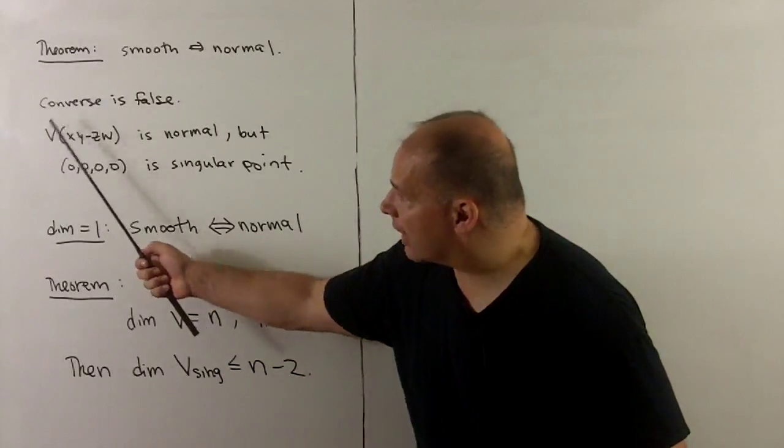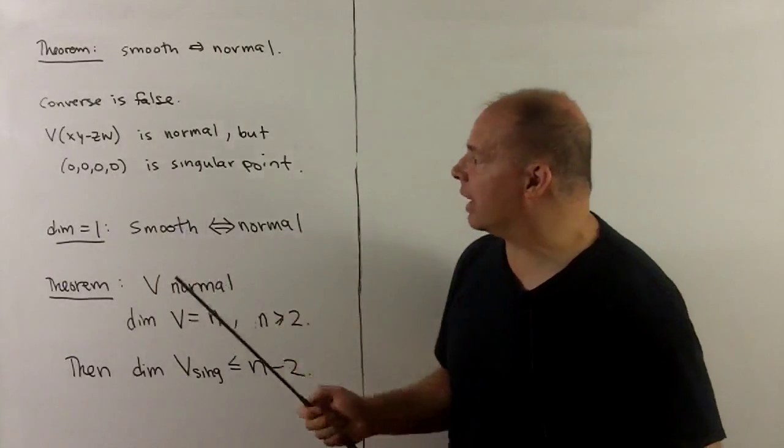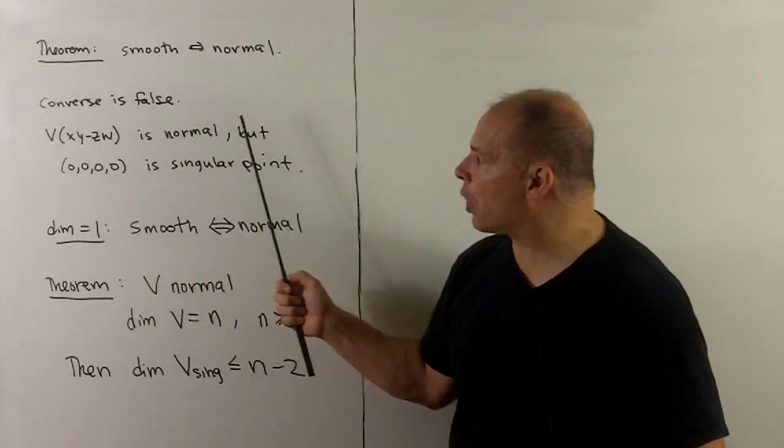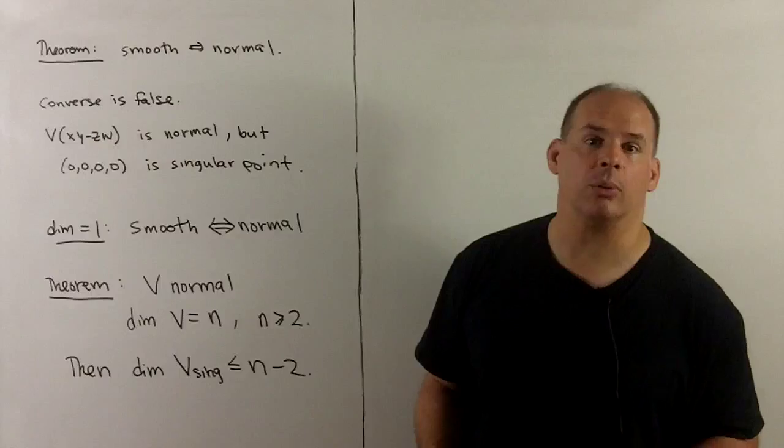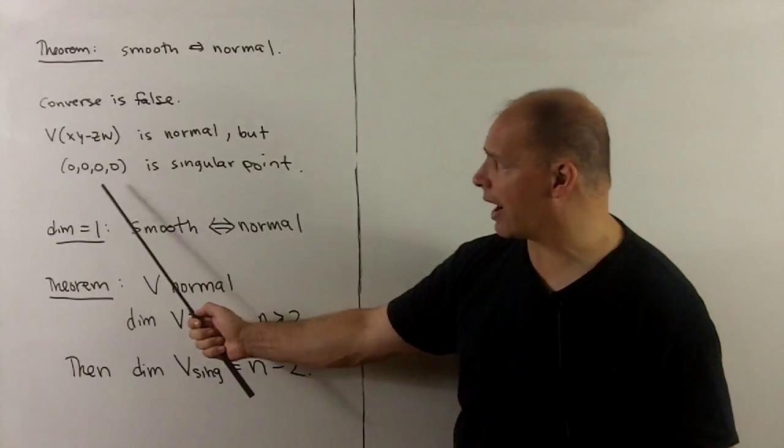For instance, if we take a variety where xy - zw vanishes, that's normal, but the origin is a singular point. We'll take another look at this example when we do toric varieties.